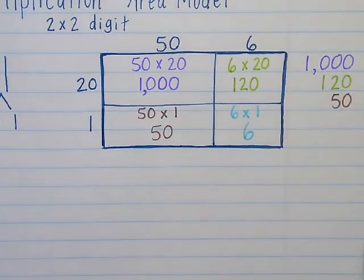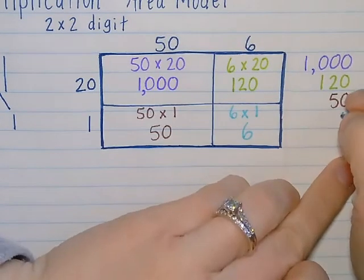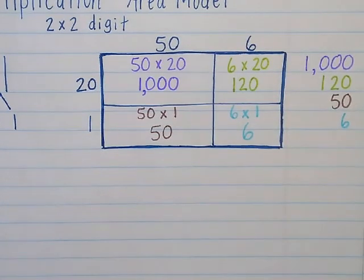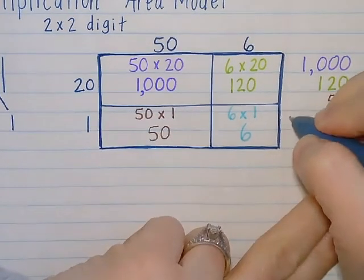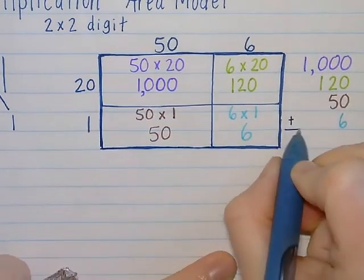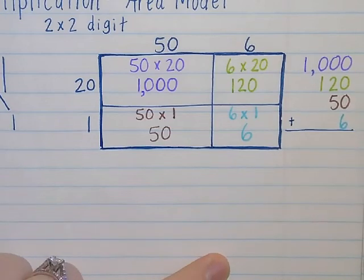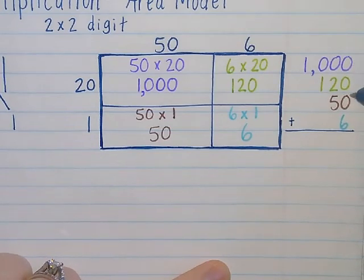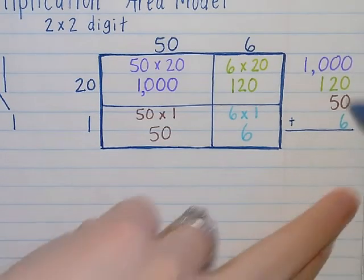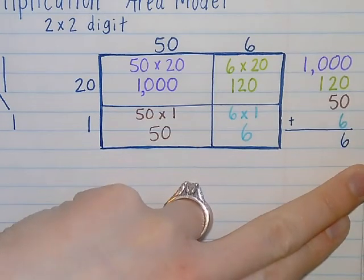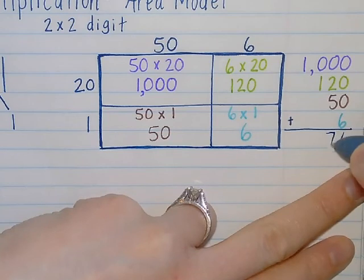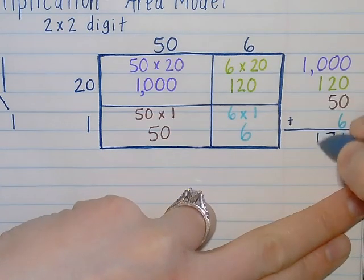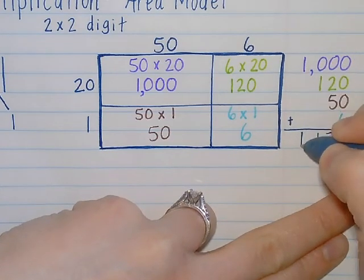So I have all of my pieces. Going to add those up. Starting in the ones place. 0 plus 0 plus 0 plus 6 is still 6. 0 plus 2 is 2, plus 5 more is 7. 0 plus 1 is 1, and 1 plus nothing is still 1.